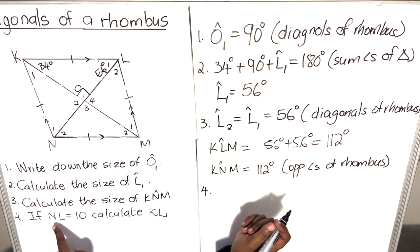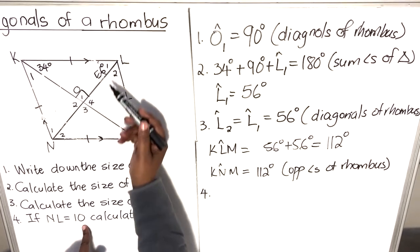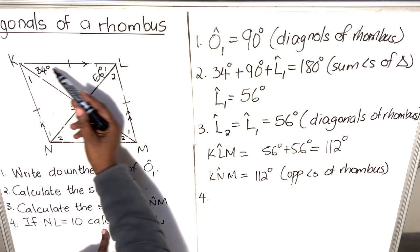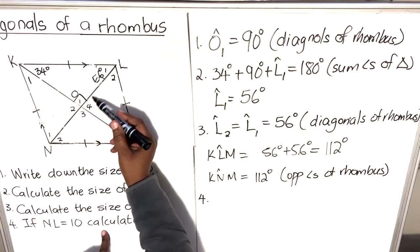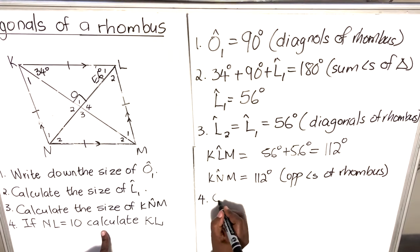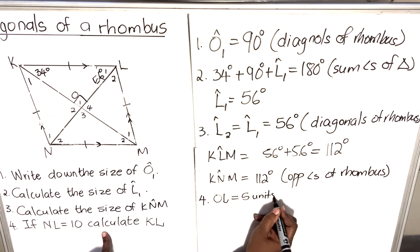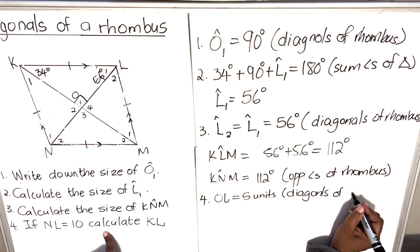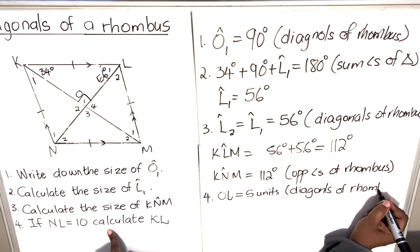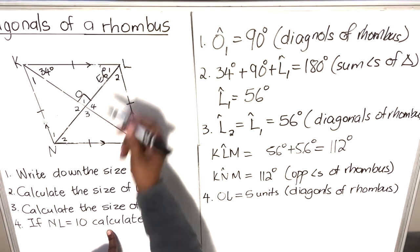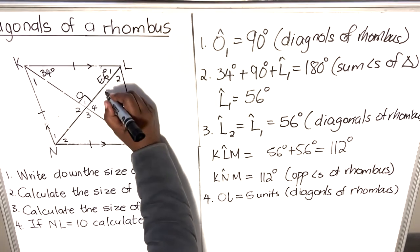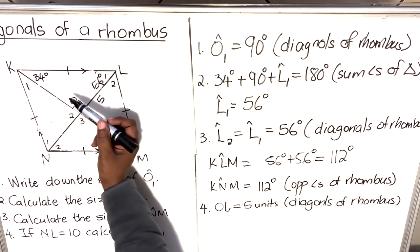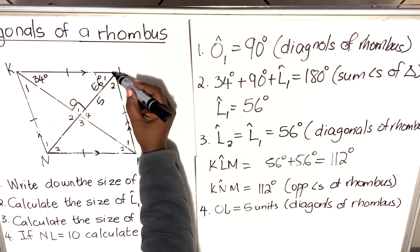Question four: if LM is 10 units — LM is this diagonal — calculate KL. So I need OL first. OL will be 5 units, and the reason is: diagonals of a rhombus bisect each other. So if the whole diagonal is 10 units, half of it is 5 units. We write the 5 on the diagram.